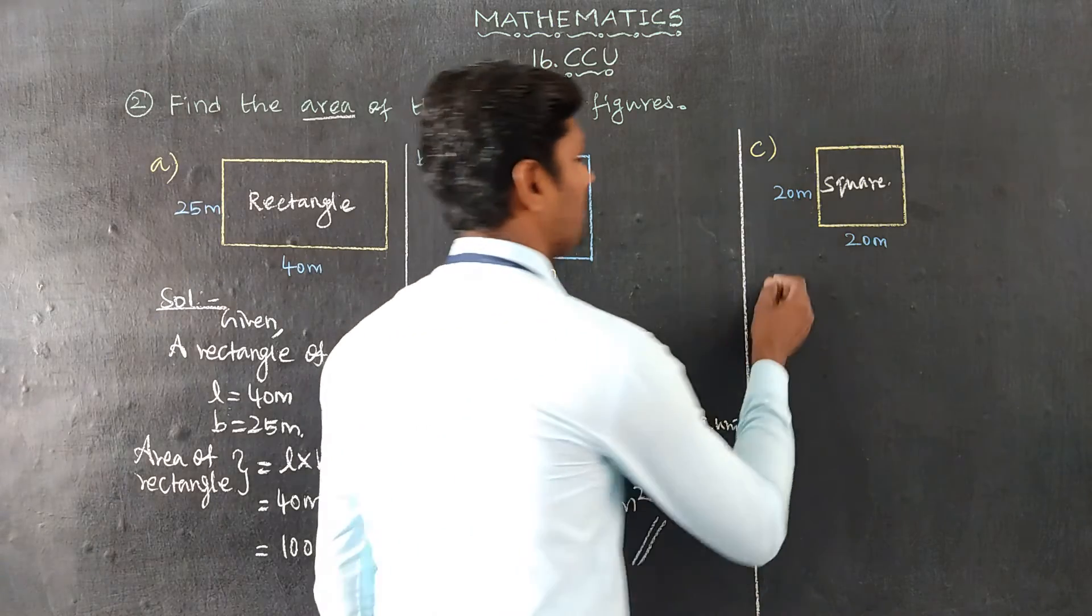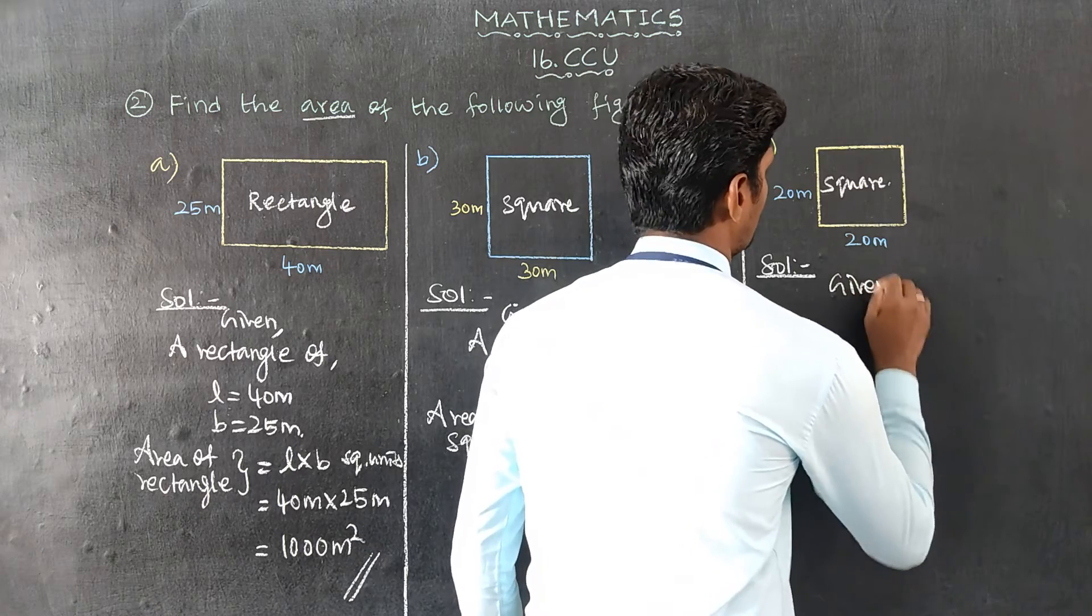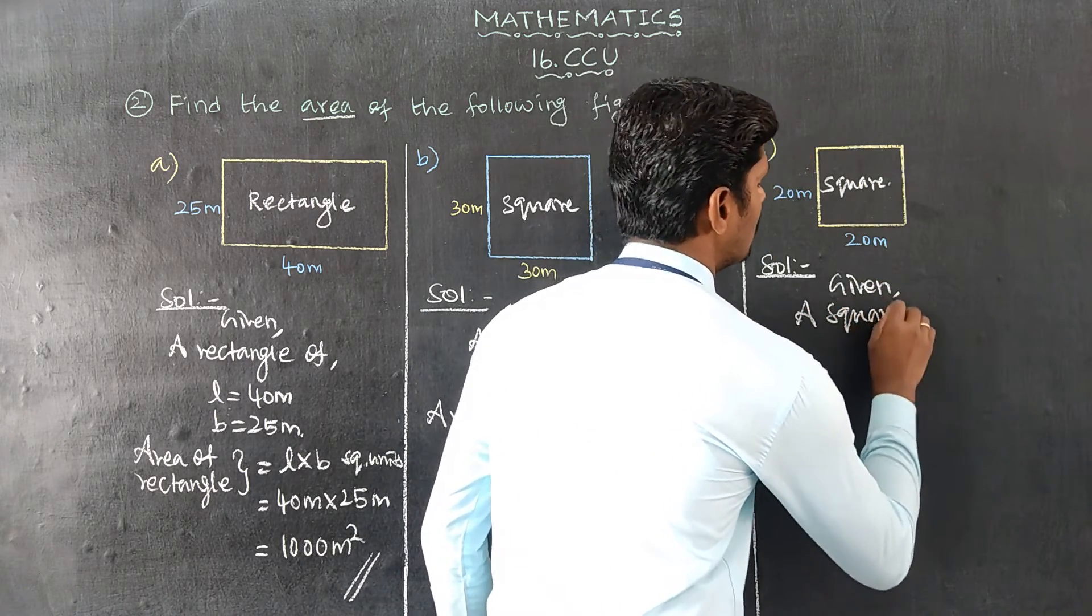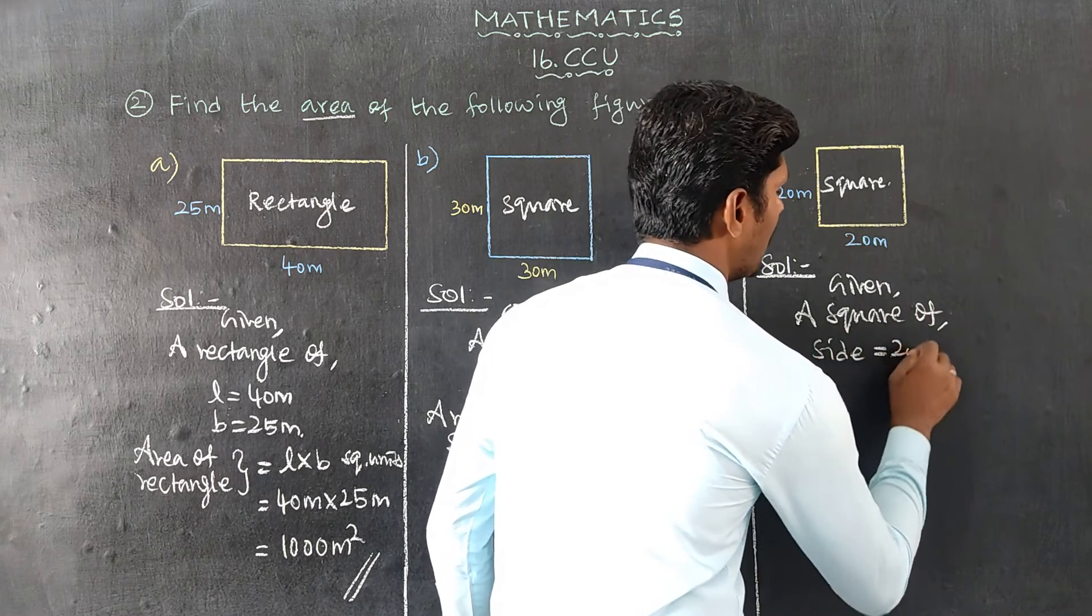Solution C: Given, a square of side equal 20 meters. Area of square equals side into side square units.